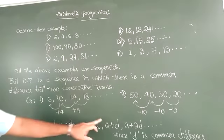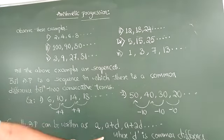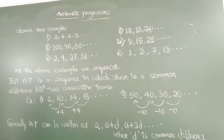Generally AP can be written as A, A plus D, A plus 2D, etc., where D is the common difference.